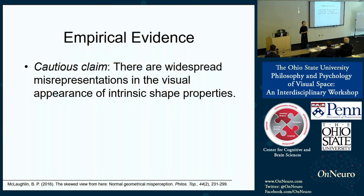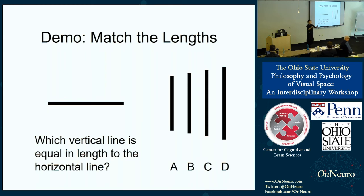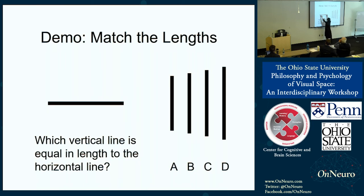Let's do a simple task together. Here is a horizontal line and four vertical lines. Which vertical line looks like it has the same length as the horizontal line? After polling the audience — A, B, C, or D — let's measure it. Matching the stick to the horizontal line and rotating it to the verticals: A doesn't match, B doesn't match — it's C. D doesn't match. The correct answer is C. At least more than half of the audience misrepresented the length, which is consistent with the classic finding of the vertical-horizontal illusion.